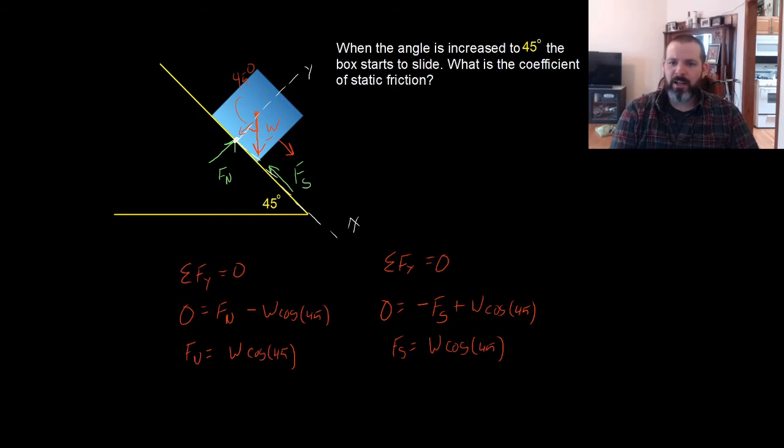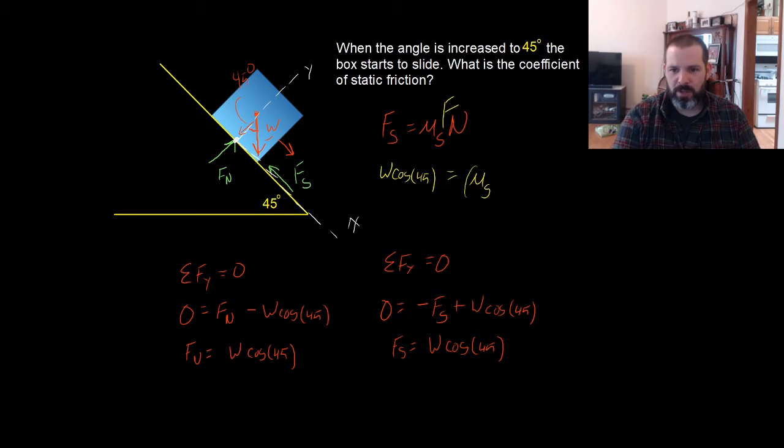Then we go back to our original relationship, knowing that the static force equals μ_s times the normal force. We know the normal force is w cosine 45, and the static force is w cosine 45. So we substitute: w cosine 45 equals μ_s times w cosine 45. If we divide both sides by w cosine 45, we find that the coefficient of static friction equals 1.